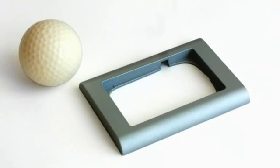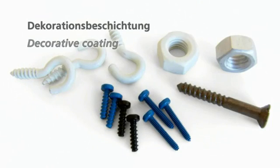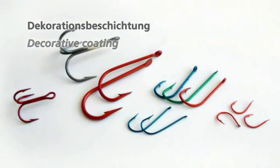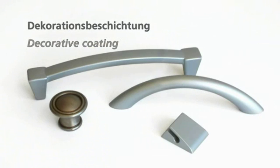For example, these screws and hooks have been coated within such a machine. And the wooden and plastic handles have received their decorative surface courtesy of the Rotomat system.